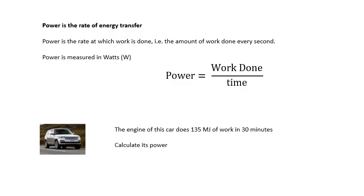Here's an example. The engine of this car does 135 megajoules of work in 30 minutes. Calculate its power. Power equals work over time, so 135 times 10 to the 6—mega is 10 to the 6, a million—divided by 30 times 60, because the time has to be in seconds. And you should get 75 kilowatts, 75 times 10 to the 3 watts.